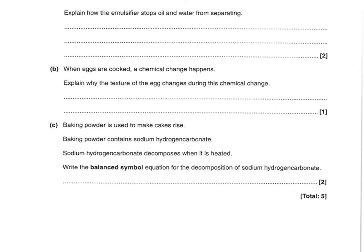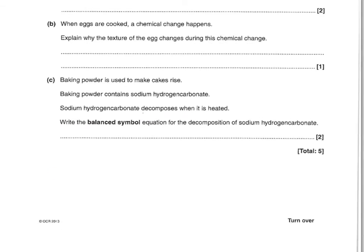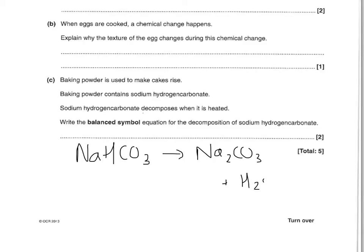When eggs are cooked, a chemical change happens. Explain why the texture of the egg changes during the chemical change. You could say the protein is denatured, or the protein is destroyed, or you could say the shape of the protein changes. Baking powder contains sodium hydrogen carbonate which decomposes when heated. Write the balanced symbol equation. Sodium hydrogen carbonate is NaHCO3. That breaks down to make sodium carbonate (Na2CO3), plus water, plus carbon dioxide — which is what makes the cake rise. To balance that, you need two sodium hydrogen carbonates. That equation is worth learning for C1. One mark for the formulae and one mark for the balancing.